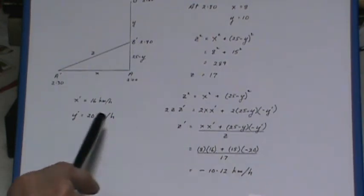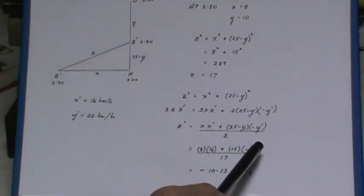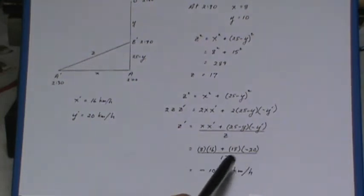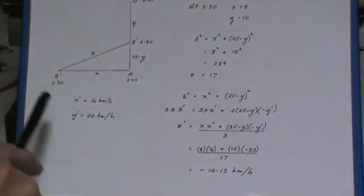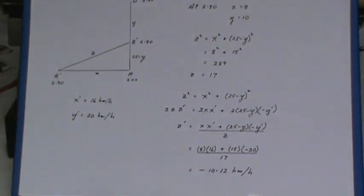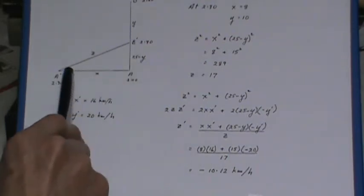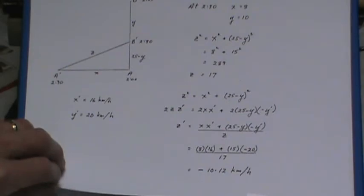You notice that I've ended up with a negative answer, meaning that this distance between the ships is shortening at the rate of negative 10.12 kilometers per hour. So this distance is actually decreasing at that time.